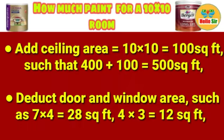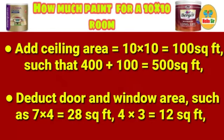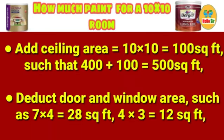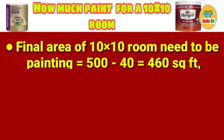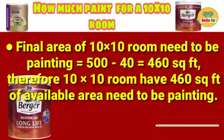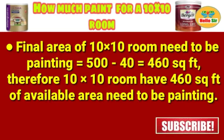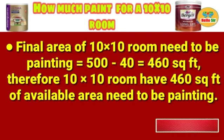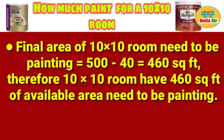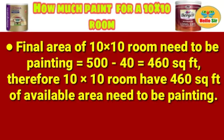Total area is 400 + 100 = 500 square feet. Next, deduct the door and window areas: door is 7 × 4 = 28 square feet, and window is 4 × 3 = 12 square feet, totaling 40 square feet of deductions. Therefore, the final paintable area of the 10 by 10 room is 500 − 40 = 460 square feet.